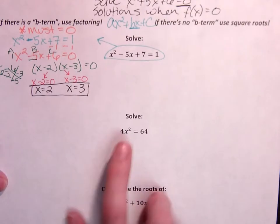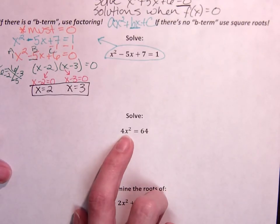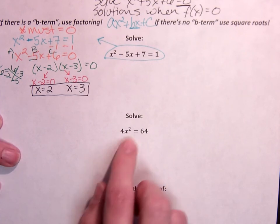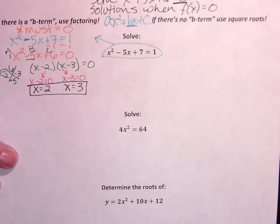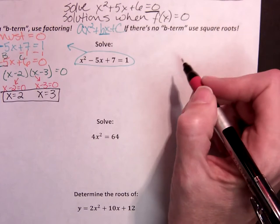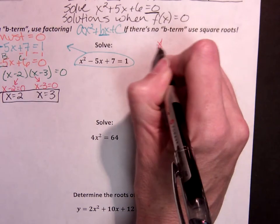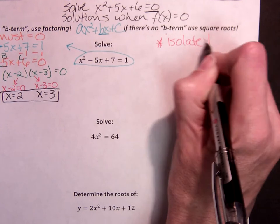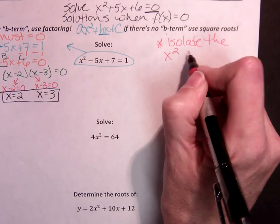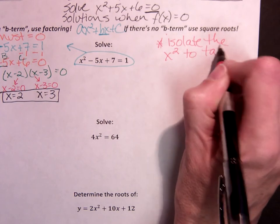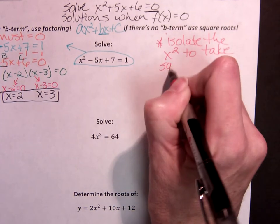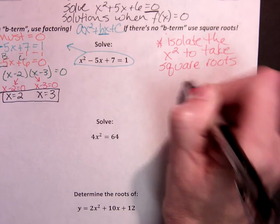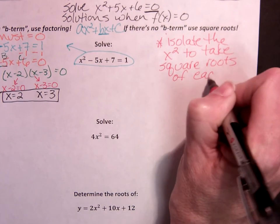Next one. 4x squared equals 64. There's no b term, so I'm going to use square roots. Important in square roots is that we want to isolate the x squared to take square roots of each side.